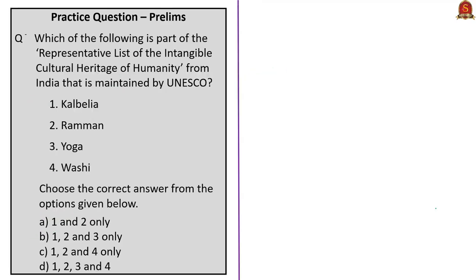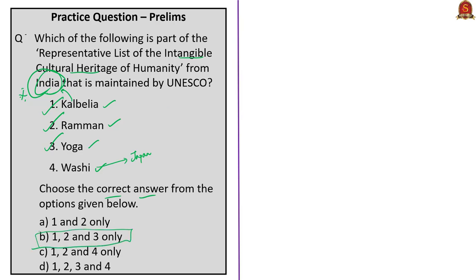The next question: which of the following is part of the representative list of the intangible cultural heritage of humanity from India maintained by UNESCO? The four items are Kalbeliya, Raman, Yoga, and Vashi. Kalbeliya, Raman, and Yoga are part of this list corresponding to India. Vashi is also on the list but corresponds to Japan. So the correct answer is option B: 1, 2, and 3 only, since Vashi does not belong to India.